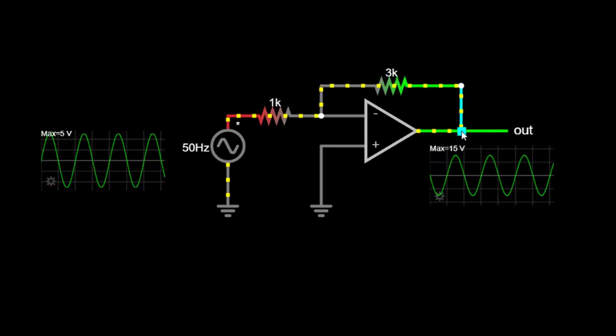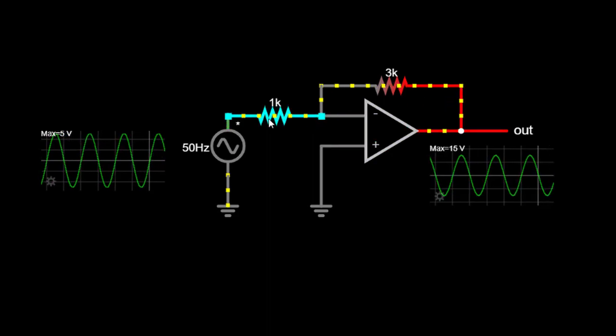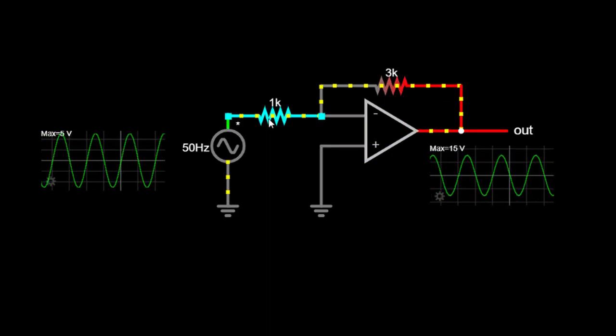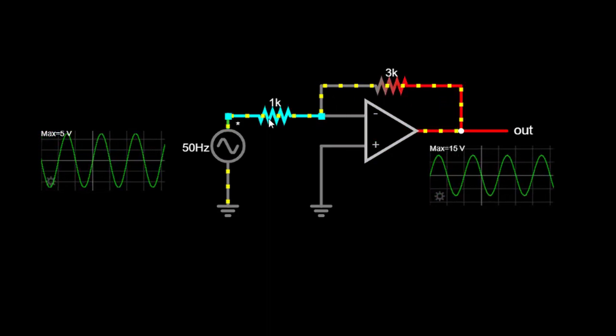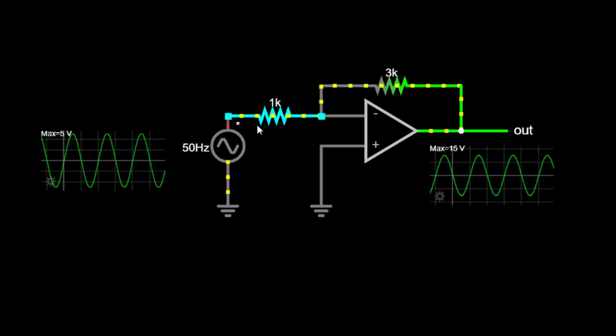To complete the circuit, we connect an input resistor, R1, between the inverting input and the ground, 0V reference.